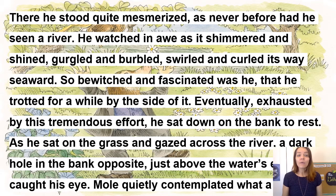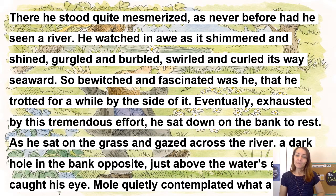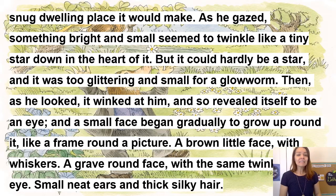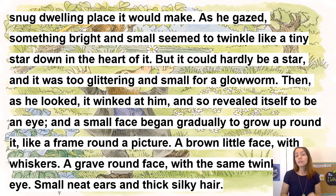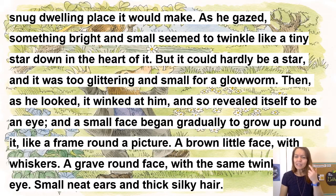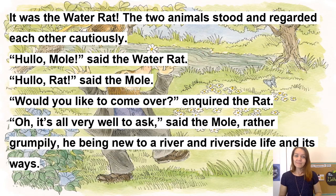There he stood, quite mesmerized, as never before had he seen a river. He watched in awe as it shimmered and shined, gurgled and burbled, swirled and curled its way seaward. Eventually exhausted, he sat down on the bank to rest. As he sat and gazed across the river, a dark hole just above the water's edge caught his eye. As he gazed, something bright and small seemed to twinkle like a tiny star — then it winked at him, revealing itself to be an eye. A brown little face with whiskers, a grave round face with the same twinkling eye, small neat ears, and thick silky hair. It was the Water Rat.